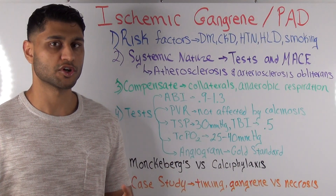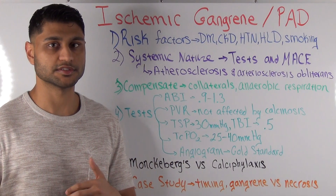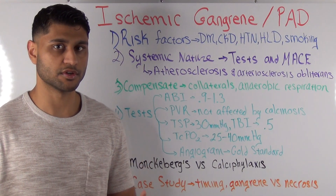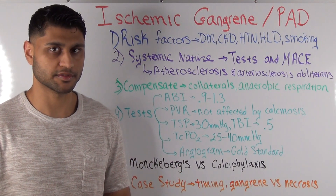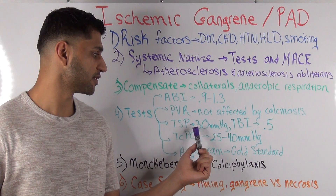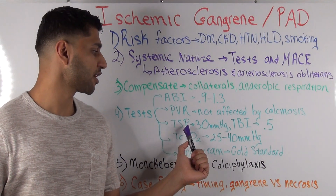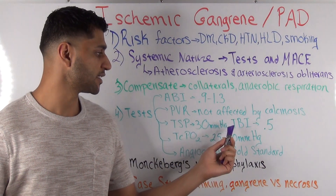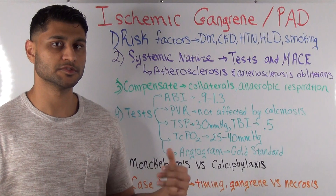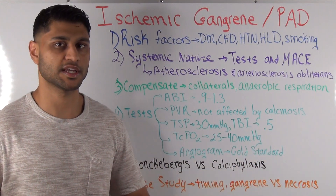The third test is your toe systolic pressure and your TBI, or toe brachial index. These are extremely helpful because generally speaking, the digital arteries are not affected by medial wall calcinosis. Whereas the larger arteries — tibial, peroneal, popliteal, femoral — can be affected, the digital arteries usually are not. These exams are given more credence when evaluating prognosis for healing. The numbers you need to know: a toe systolic pressure less than 30 mmHg or a TBI less than 0.5 indicates very poor prognosis for tissue healing, and these patients will likely need to be revascularized.